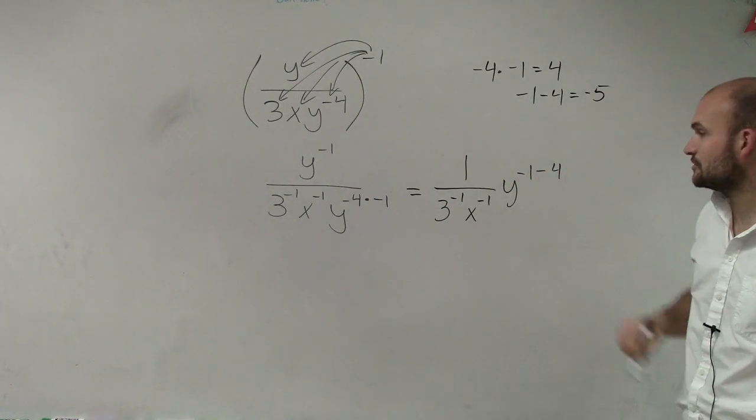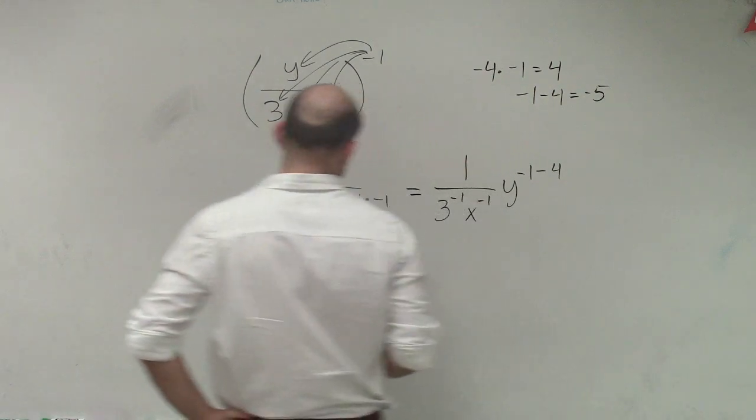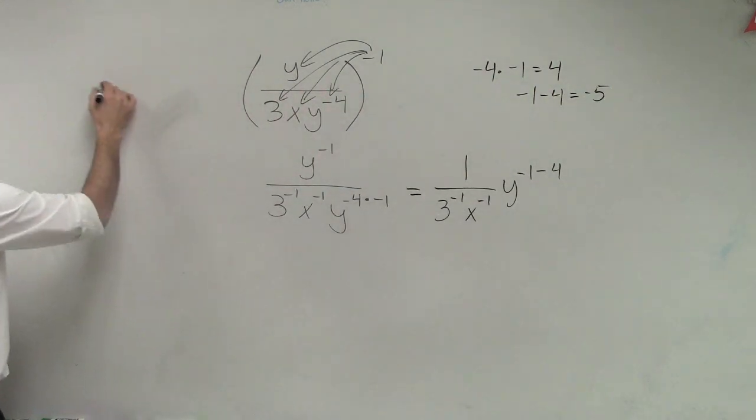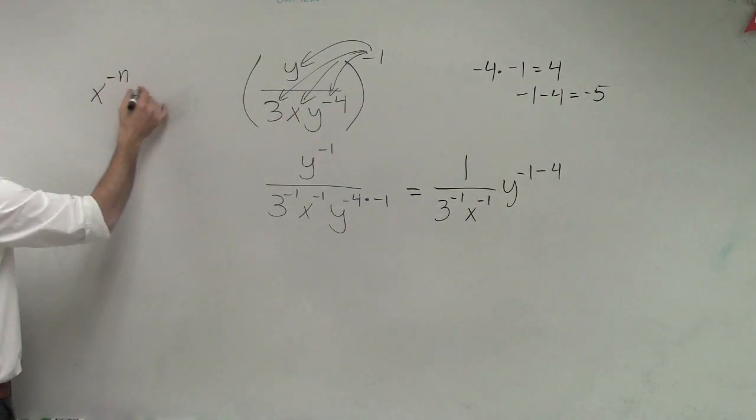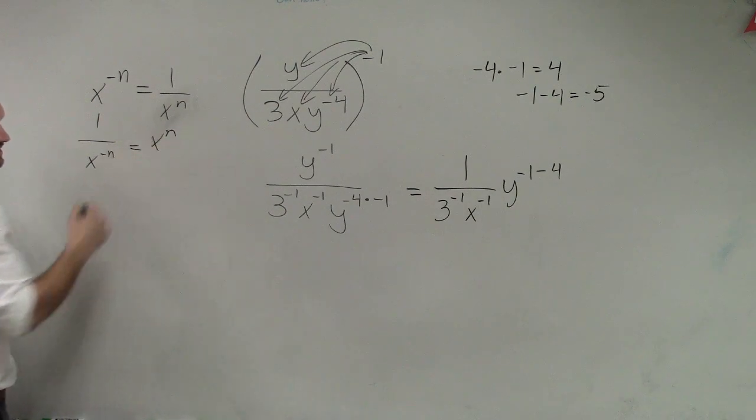So therefore, now that is going to be in my denominator. So what this now looks like, now remember, here's our rules that you need to remember. x to the negative n equals 1 over x to the n. And 1 over x to the negative n equals x to the n.